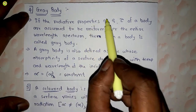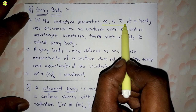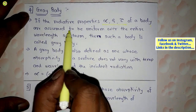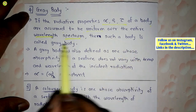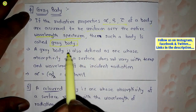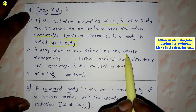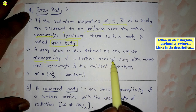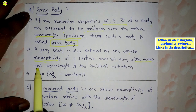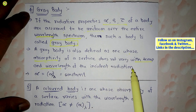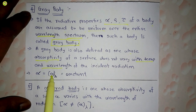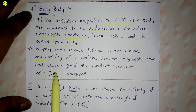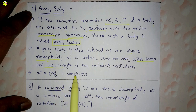A gray body is one whose radiative properties — absorptivity, reflectivity, and transmittivity — are assumed to be uniform over the entire wavelength spectrum. A gray body is also defined as one whose absorptivity does not vary with temperature or wavelength of the incident radiation. Mathematically: α = α_λ = constant.